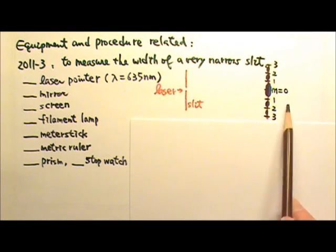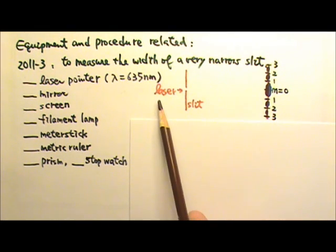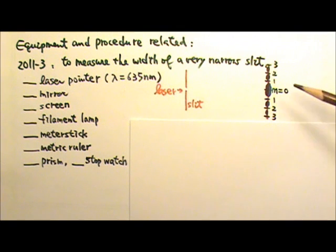For single slit diffraction, the setup is like this. We shine a light at a slit, and on the screen, we would see patterns that include a central maximum that is twice as wide as the other maximum.